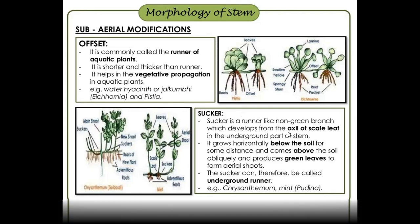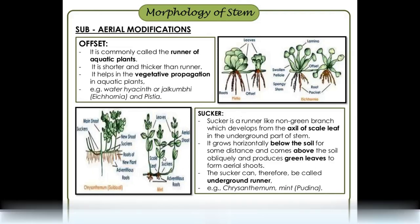Sucker is also a type of runner but the branch is oblique. Leaves are scale-like. The stem is underground and horizontal. If the branches emerge, the leaves are the branches. Examples include chrysanthemum and mint.